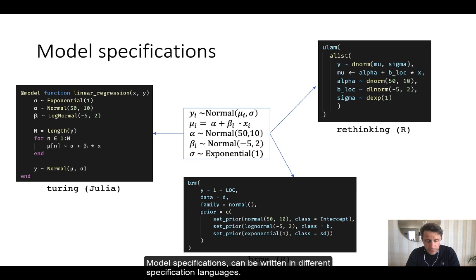Model specifications can be written in different specification languages. If you look to the left, you see a model specified using the programming language Julia and the Turing library. In the bottom, we see a model specified in the programming language R using the package BRMS. Finally, in the top right corner, we see a model specified once again in R using the rethinking package.